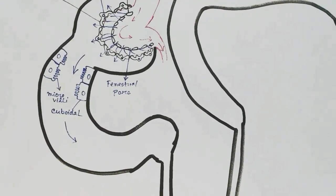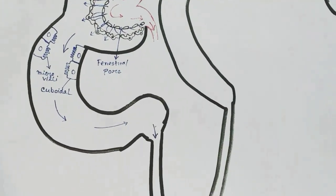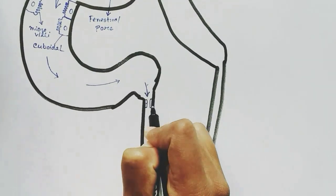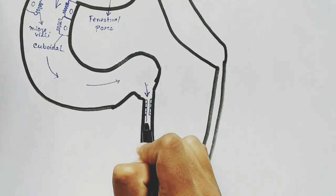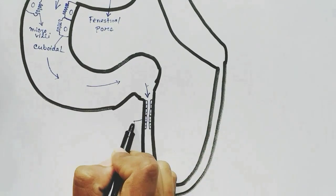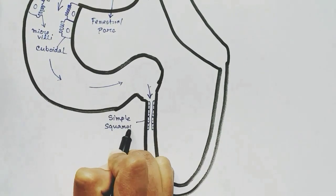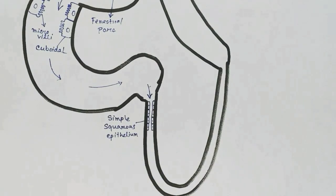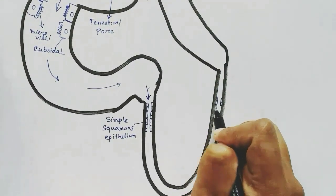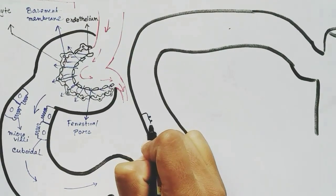Now in Henle's loop, the cells are simple squamous epithelial cells, which simply absorb water in the descending limb. In the ascending limb, electrolytes are reabsorbed. Both the thin segments of the U-shaped structure of Henle's loop have squamous epithelial cells.